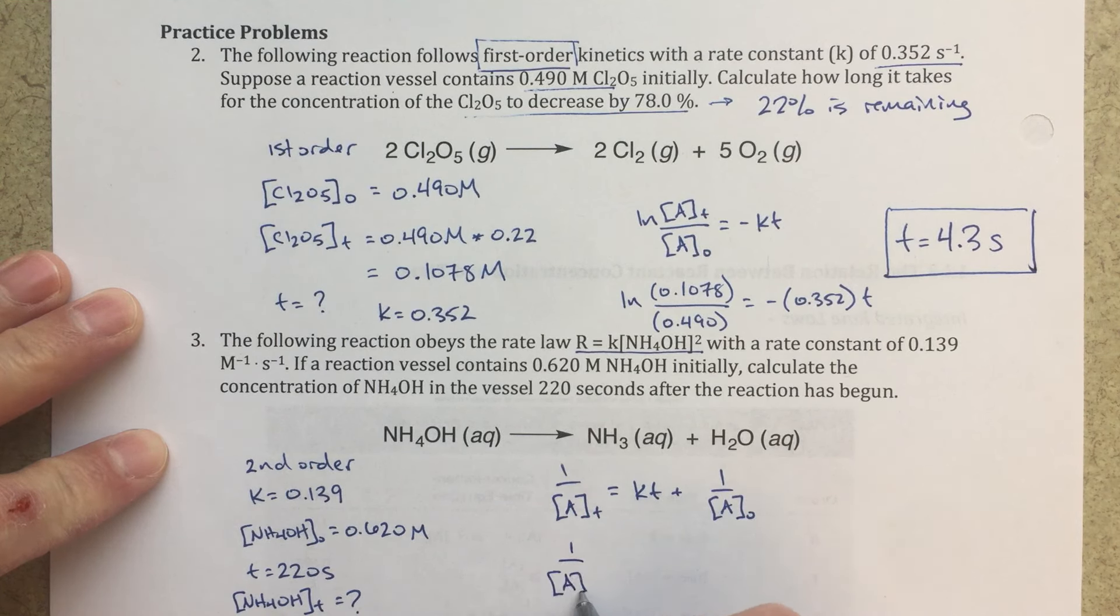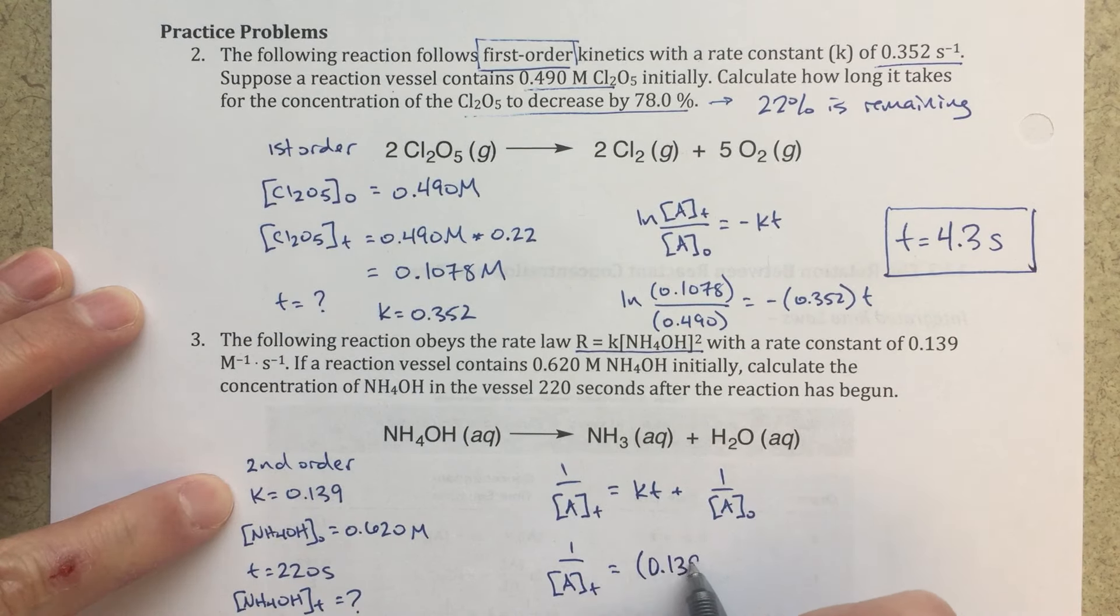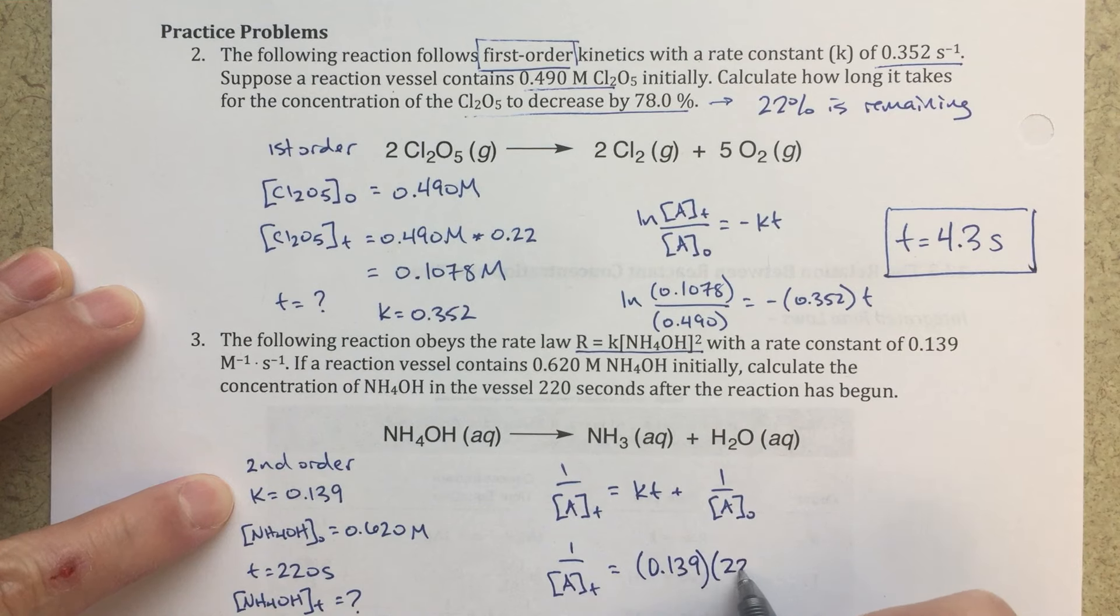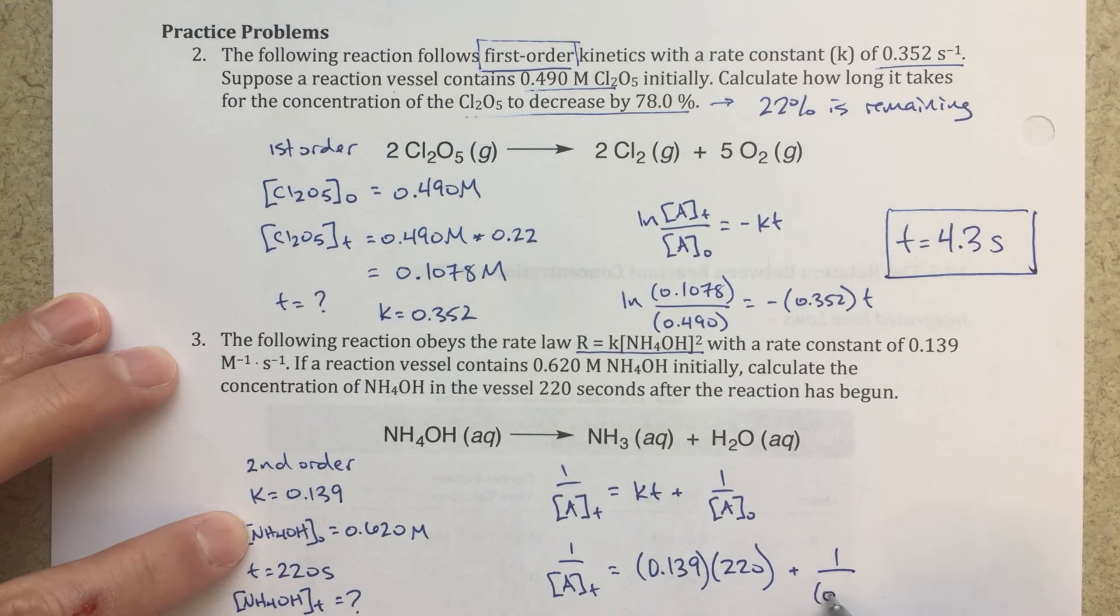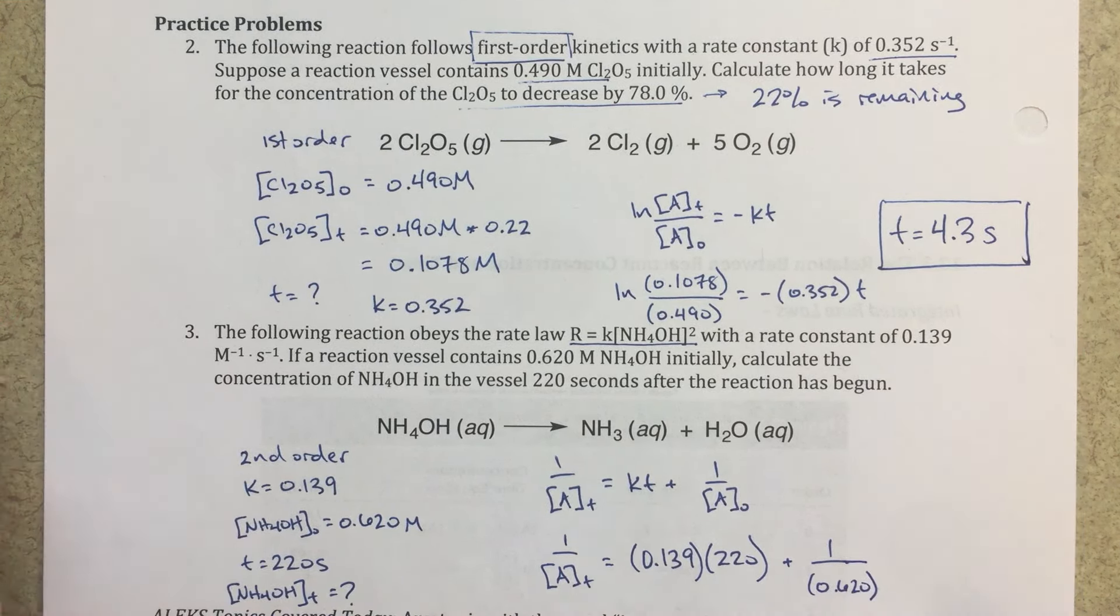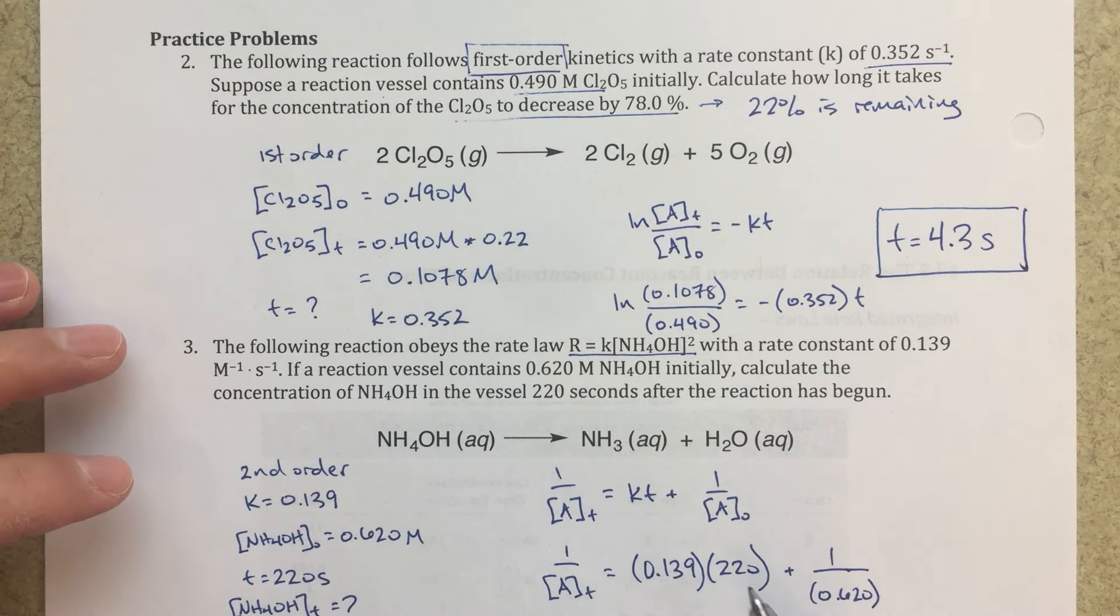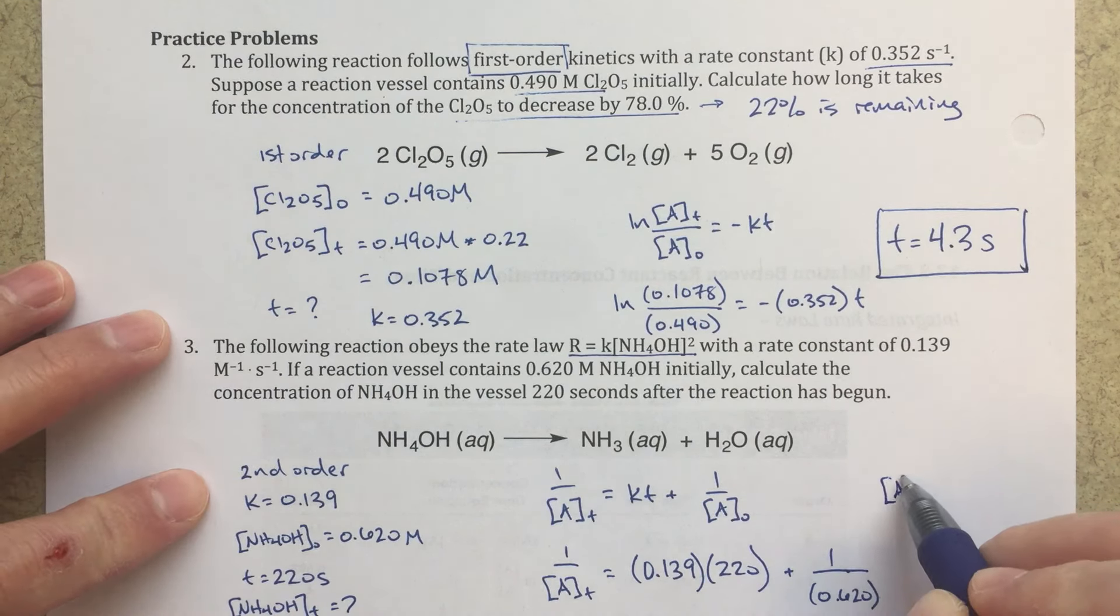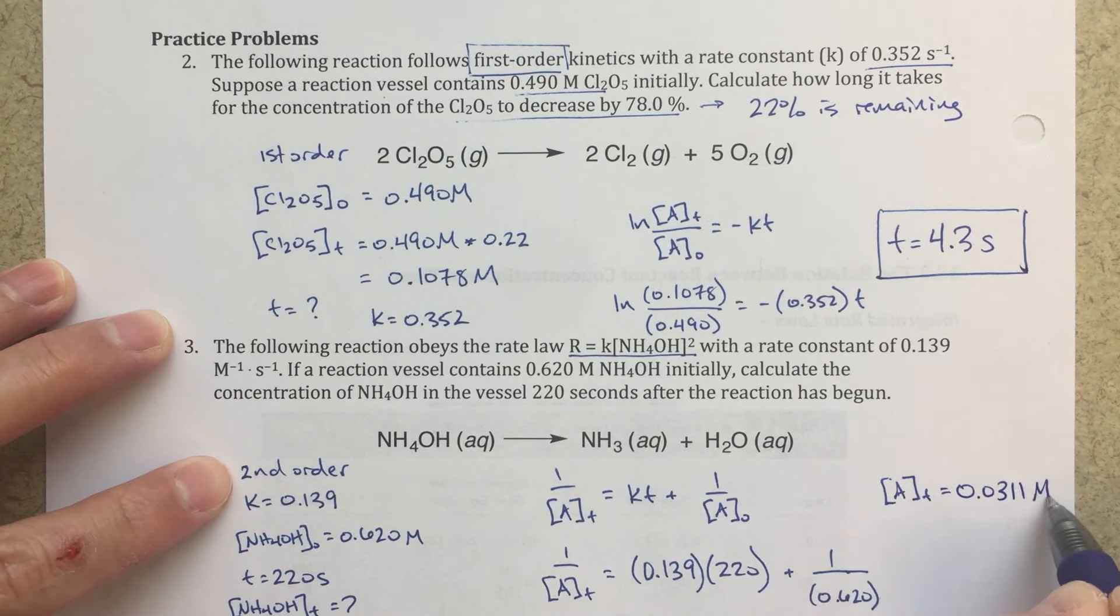So that is our unknown. We're going to make that equal to 0.139 times 220 plus 1 over 0.620. And now I'm going to solve for this concentration at time T. So, again, just plugging this into my calculator. Then I'm going to have to take an inverse of that essentially. So whatever value I get over here, I can bring that over, bring the A of T up here. And anyhow, we are going to solve that to get to a final concentration of 0.0311 molar.